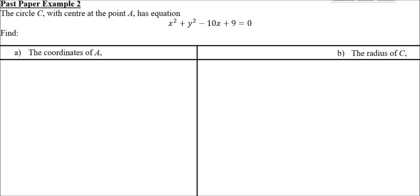For worked example two, we need to apply the expanded form. We need to complete the square on the x² - 10x part. The y² term is already fine as it has nothing else involved. So we focus on completing the square for x² - 10x.